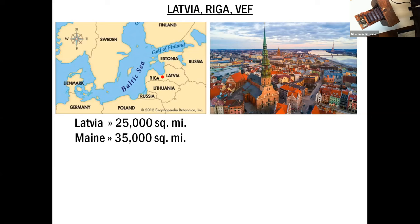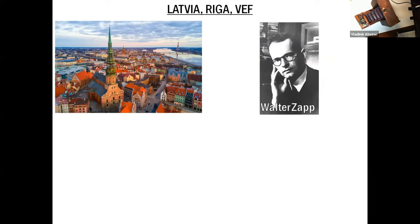Now let's talk a little about Latvia. Latvia is a small country on the Baltic Sea — smaller than the state of Maine. Riga is the capital of Latvia, and the Gothic structures there reflect a strong tradition of German culture, because in 1201 Riga was founded as a German fort. Historically, many Germans lived in Riga and were called Baltic Germans — one of them was Walter Zapp.